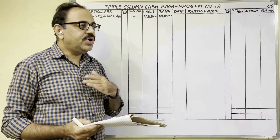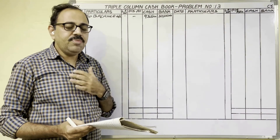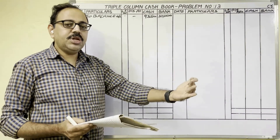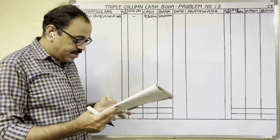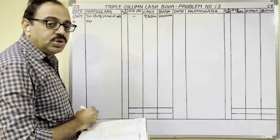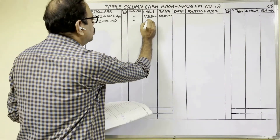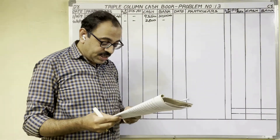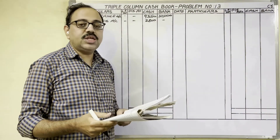Goods are going from the firm to the customer and the customer is paying cash to us, so cash is coming in — debit side. For the date, we are selling goods so write 'To Sales Account' in the cash column: 2,800 rupees. 7th date: Sold furniture and received amount through Google Pay — 6,000 rupees.